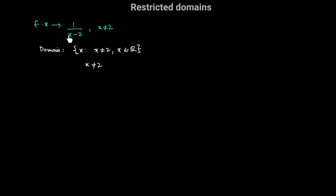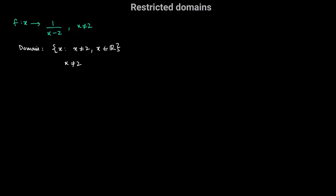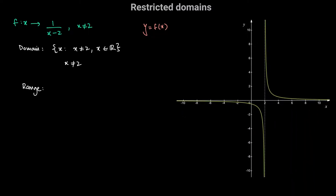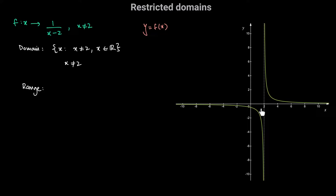The input can be any real number except 2. Now the next question is: what is the range of this function? The range is a set of outputs given by a function. Let's say y is equal to f of x, so if x is the input, the output is y. Let's look at the graph of y is equal to 1 over x minus 2. When x is equal to 2, the function is undefined — we'd be doing 1 divided by 0.